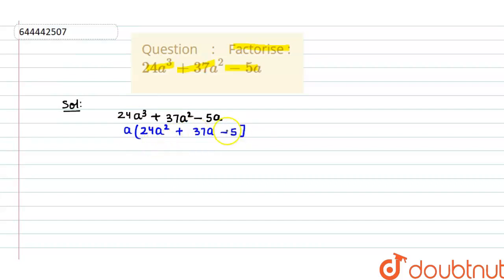Now this is converted into a quadratic equation. Quadratic equation means whose highest power is 2. Now we can solve it by middle term split method. So middle term split method means we have to take 24 into 5.